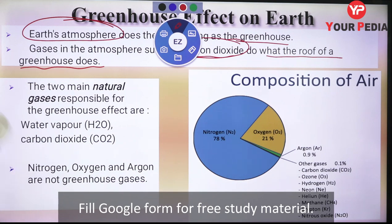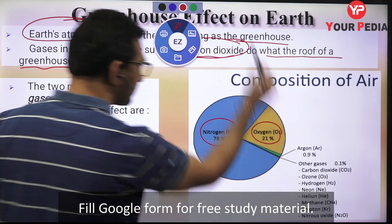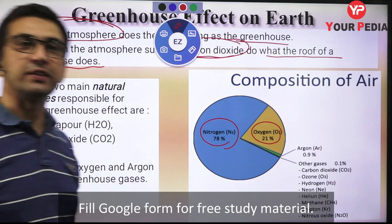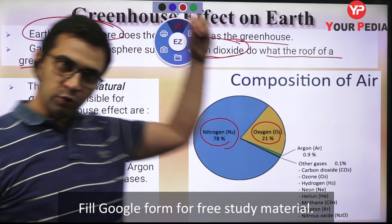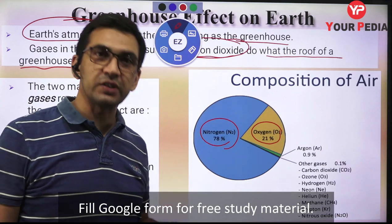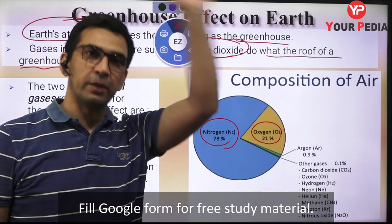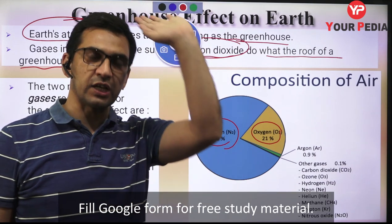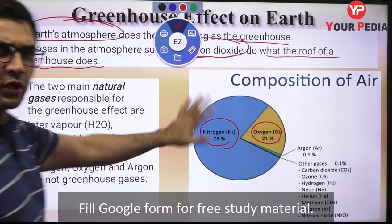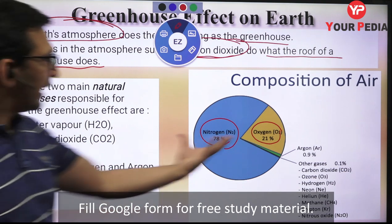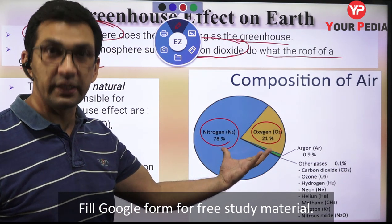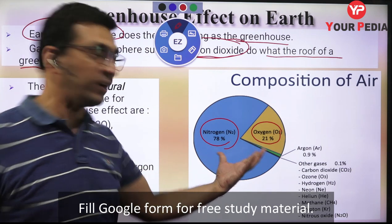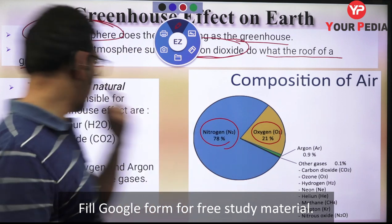Now, which gases behave as greenhouse gases? Fortunately, nitrogen and oxygen - the gases in the largest proportion - are not greenhouse gases. They allow short wave radiations to pass through and also allow long wave radiations to escape back to space. They do not block them. This is a good thing, because the largest proportion of atmospheric gases are not blocking those radiations.